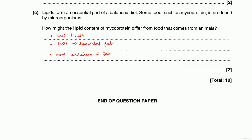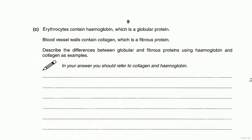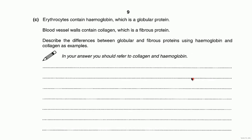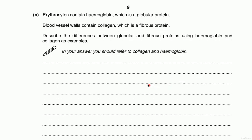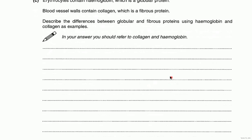That is not quite the end of question three — there is one more part to do with haemoglobin, so we're back to proteins. It's all to do with describing the differences between globular and fibrous proteins, and you have to compare haemoglobin with collagen. I'll just dictate this as it's all set out well in your notes.